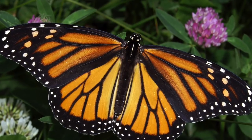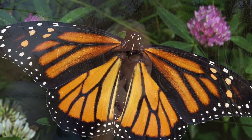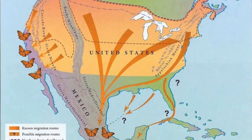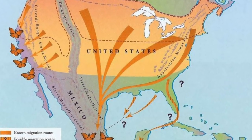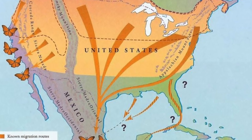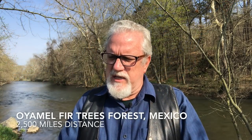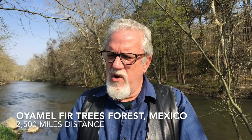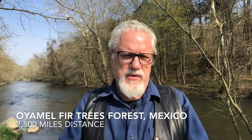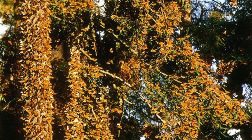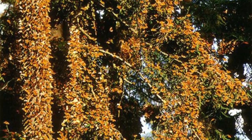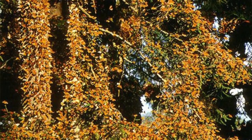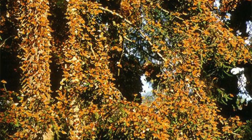Monarch butterflies can be found all the way up into Canada, way up north. But did you know that the monarch butterfly travels 2,500 miles? It comes across the east coast of America, goes over the southern parts, over Texas, down to Mexico, and goes to a specific type of tree — the Oyamel fir trees in southern Mexico. Millions of these butterflies travel 2,500 miles to go to that one forest and lay their eggs in those trees.